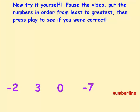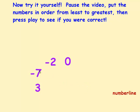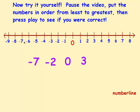Now this is where I want you to try it by yourself. Hit pause on the video, put these four numbers in order from least to greatest, and then press play to see if you got it right. I'm going to put 0 first because it separates the positive and negative numbers, then negative 2, then negative 7 on the negative side, and the positive 3 on the positive side. So in order from least to greatest: negative 7, negative 2, 0, and positive 3.